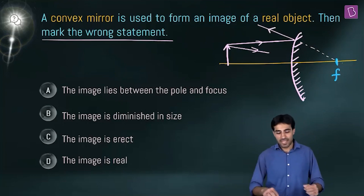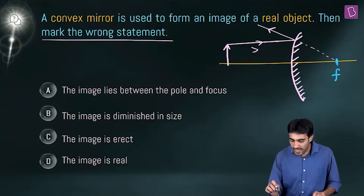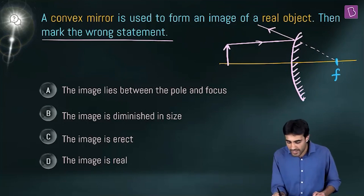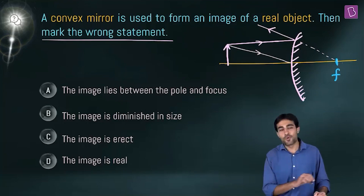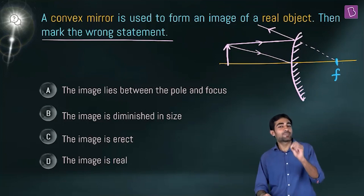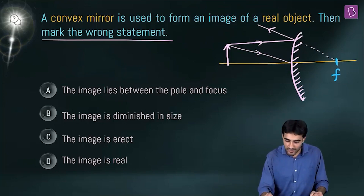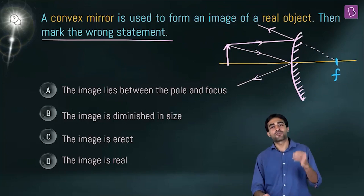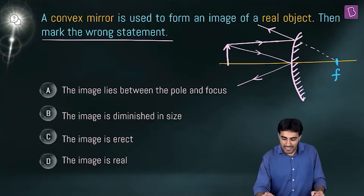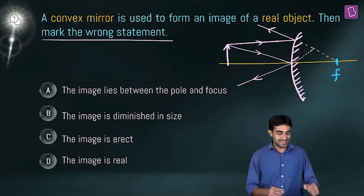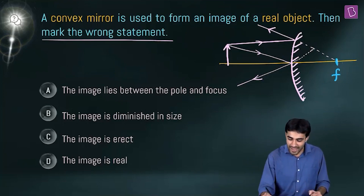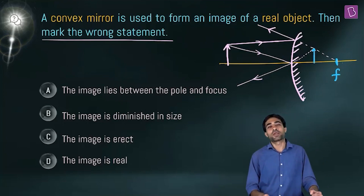The second ray incidents the mirror at the pole. At the pole, the principal axis is the normal, so angle of incidence equals angle of reflection. After reflection of this ray, we extend it on the other side, and we can see the reflected light appears to meet at a particular point.